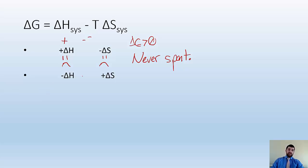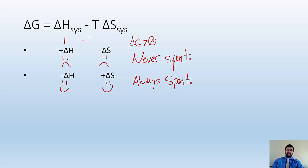If I have a negative delta H and a positive delta S, well, negative delta H tells me it's exothermic, which is favored, and a positive delta S is also favored — it becomes more chaotic, more random. So both are favored, which means it's always spontaneous. If you have a reaction with a negative delta H and a positive delta S, it's always going to be spontaneous regardless of temperature.